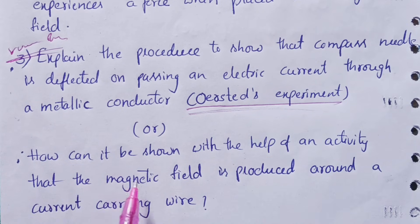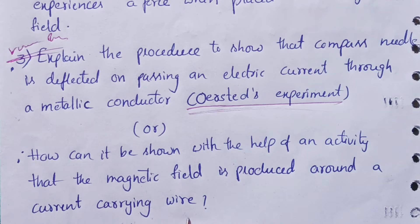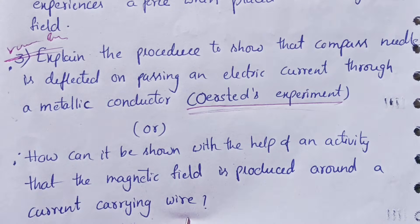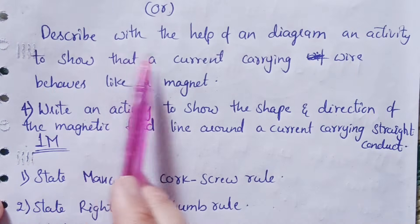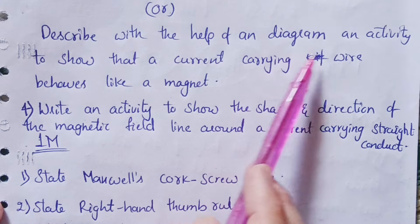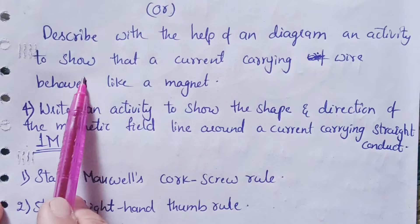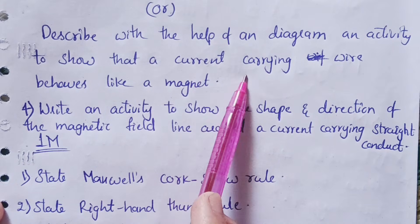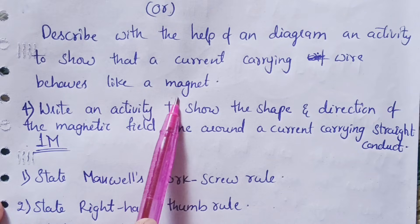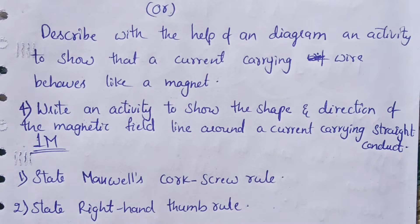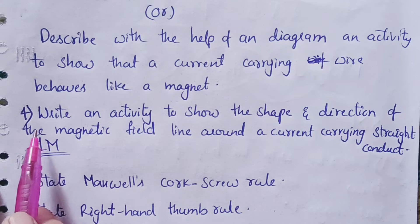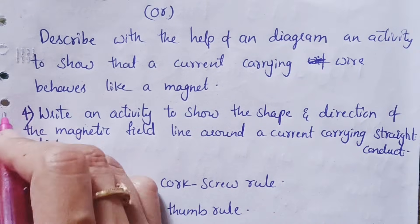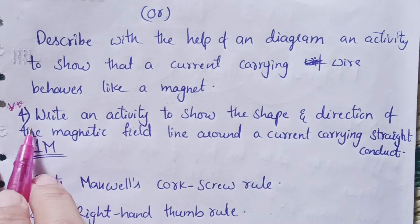Sometimes they will ask you the question like: how can it be shown with the help of an activity that the magnetic field is produced around a current carrying wire? Or else sometimes they will ask: describe with the help of a diagram an activity to show that the current carrying wire behaves like a magnet.